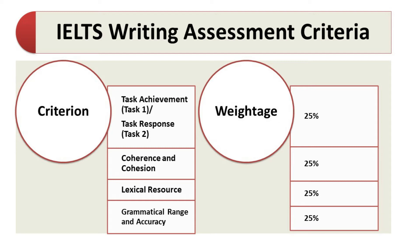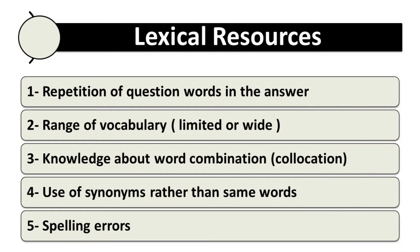The third area is lexical resource, which is related to the vocabulary that we are talking about. It is also worth two and a quarter of band scores, which means if you perform better in this area you have good chances to score better in your IELTS writing. Lexical resource consists of almost five different things.